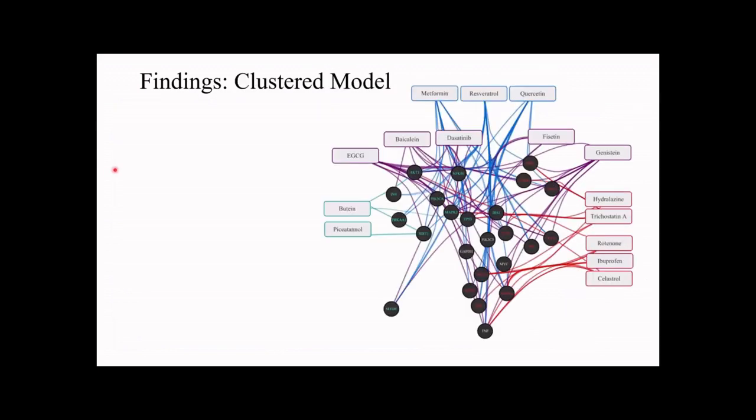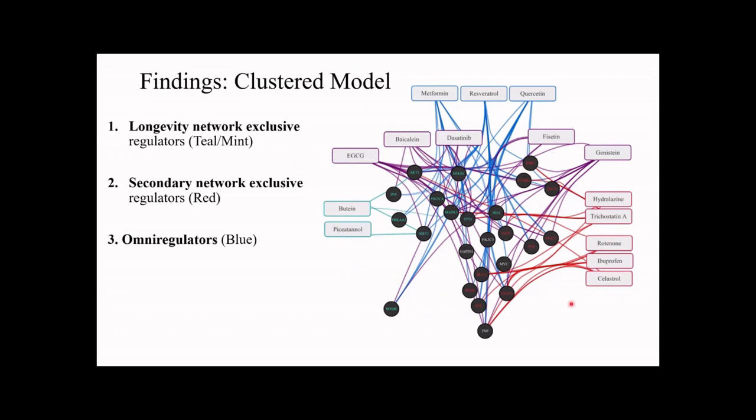We then took these three isolated networks and extracted the hub genes to construct a new complex network incorporating all three in their central degree of connectivity, where we found four distinct clusters of longevity regulating drug compounds. First being the longevity network exclusive regulators such as butein and PCA adenil. The second cluster included drugs that interacted with the secondary networks and senescence, particularly hydralazine, ibuprofen, and celastrol. Then we had a class of omni-regulated drugs such as metformin, resveratrol, or quercetin that interacted with all hub genes in all three networks. And we also had pseudo-omni regulators that did not interact with quite all of them but still had significant association with different networks.